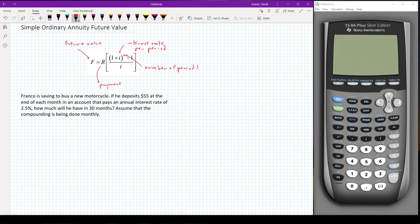So we know we're going to be using this formula here, and what we're going to find is the future value. So we're going to be solving for F. And they told us that the payments, the deposits that he's making at the end of each month, are $55, so R must be equal to 55.